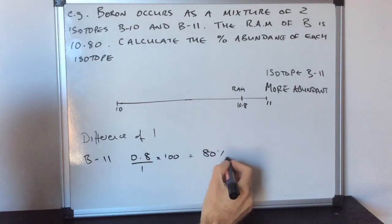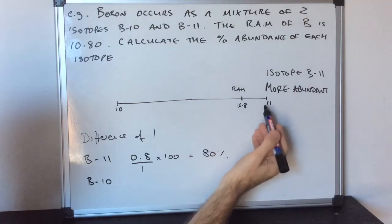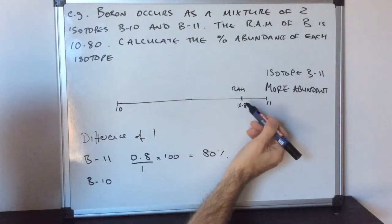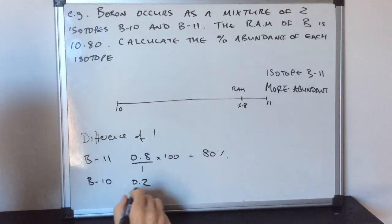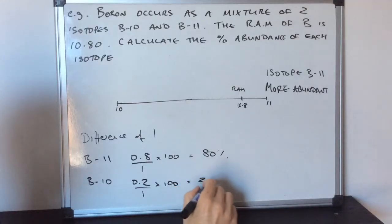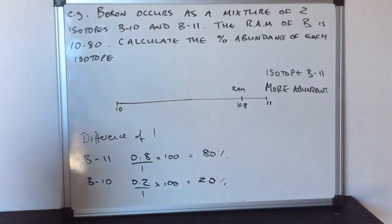That's an 80% abundance of that isotope. B-10 is not pulling very much because it's only pulling away from there by 0.2 of the one difference times 100. And that's 20%.